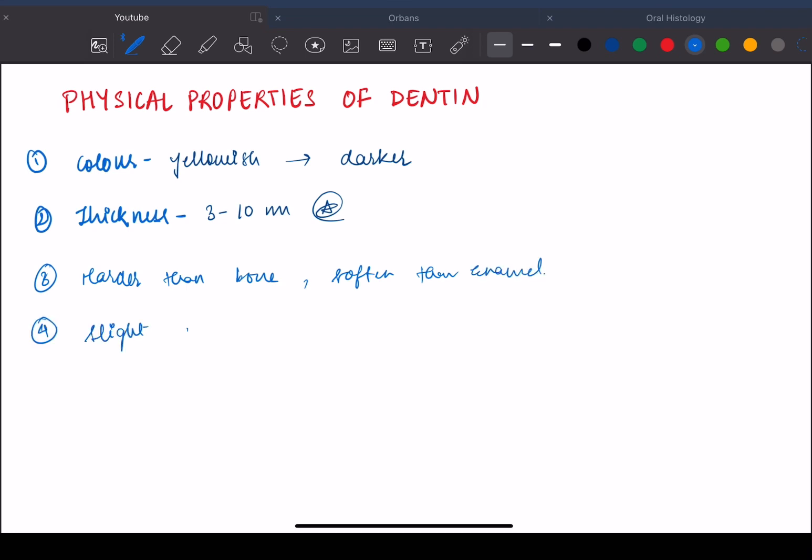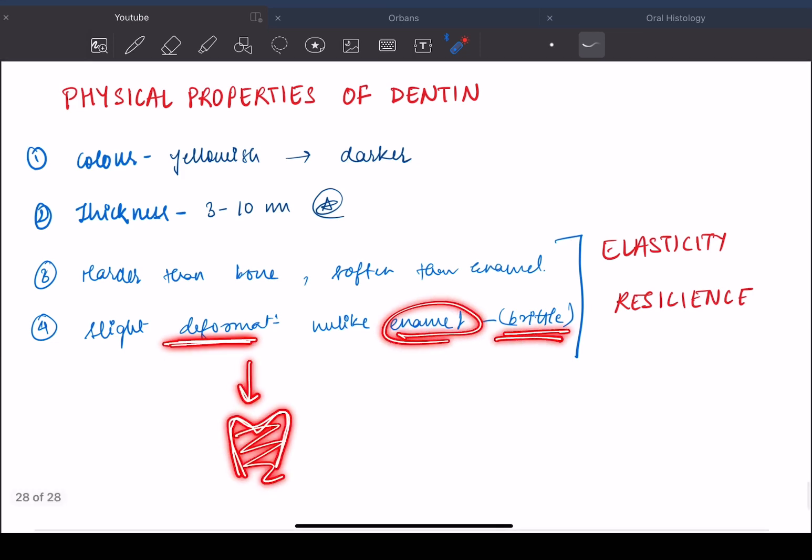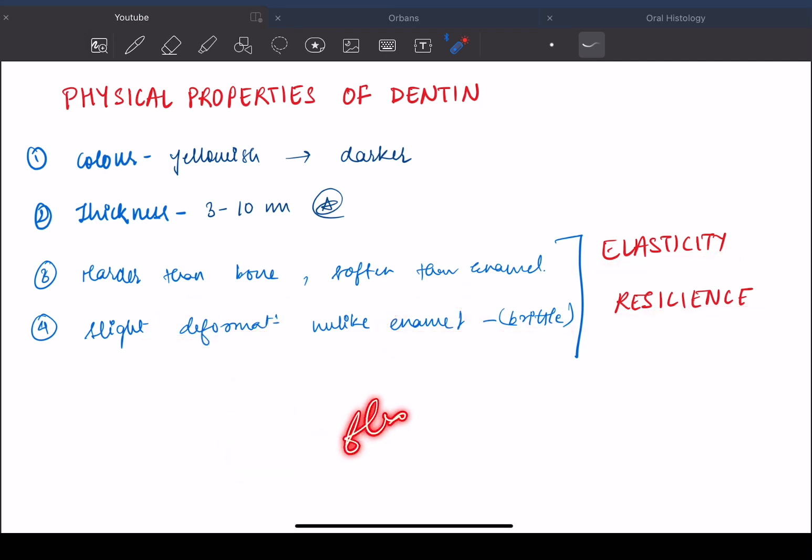It can undergo slight deformation unlike enamel which is brittle. These two properties are called elasticity and resilience. When the masticatory forces are applied on the tooth, if it was made completely of enamel which is hard and brittle then it would easily chip off. But because of the presence of dentine underlying the enamel, it can undergo slight deformation. It is elastic and resilient in nature which can withstand the forces and undergo slight flexure.